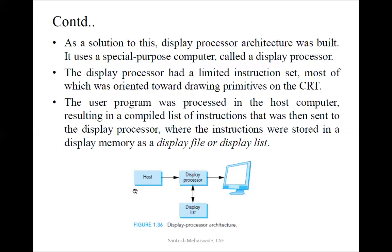We are avoiding the burden on the host machine. If I want to draw a triangle, it is given to the display processor, which processes it. Once processing is done, it stores it in a display list — a kind of list or file that stores all the primitives it wants to display. Based on the request, it fetches from the display list and shows it on the CRT monitor. When the display processor performs this job, the host machine becomes idle so it can perform any other operation.